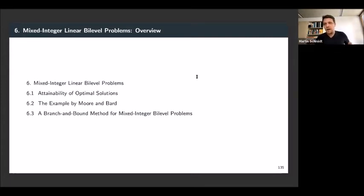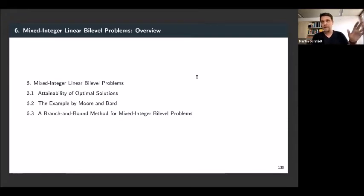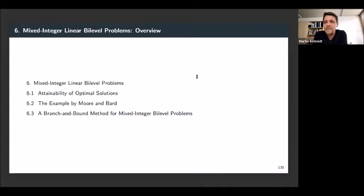Now in the final part of this lecture, I'm going to talk about mixed integer linear bi-level problems. You might have integer variables both on the upper level and on the lower level. What's going to happen now is very interesting because it's a completely different thing compared to what we have seen. The branch and bound method I just explained could be covered quickly because it was exactly the same method as yesterday, but this is not the case anymore for mixed integer linear bi-level optimization.